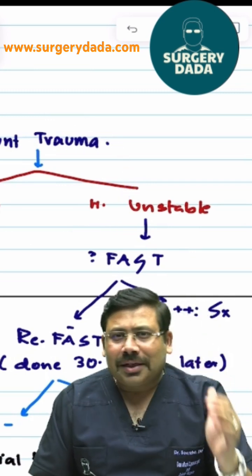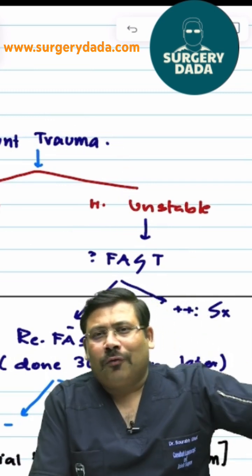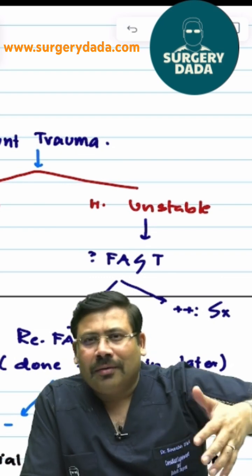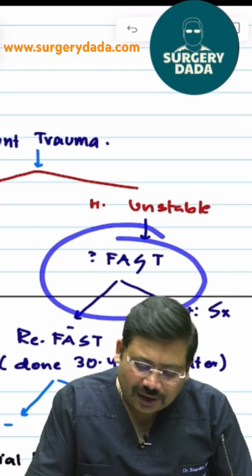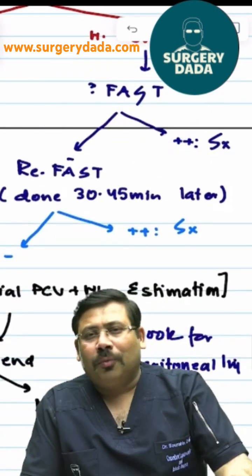Now come on to the blunt trauma category. Unstable patient versus stable. Stable, you go for CT. Unstable, you are deciding - should I go for conservative or should I go for surgery? So FAST has to be done.